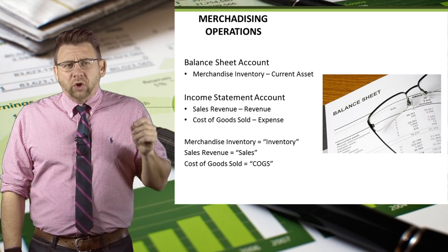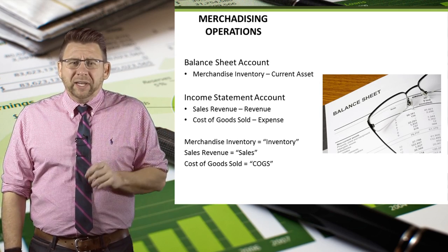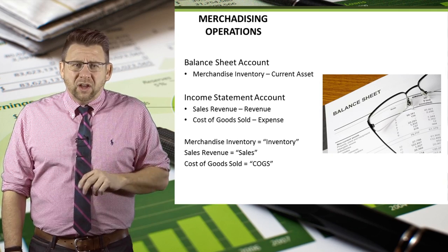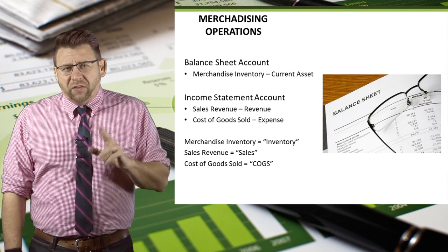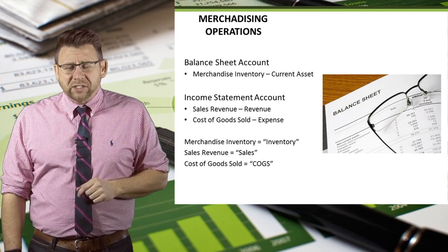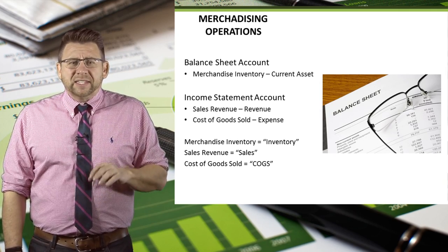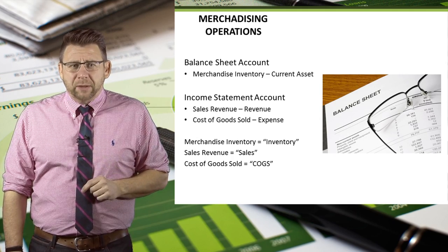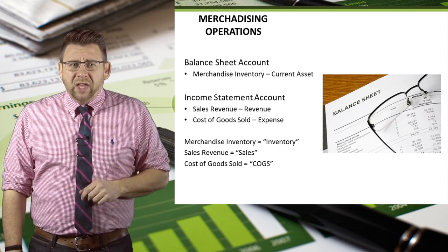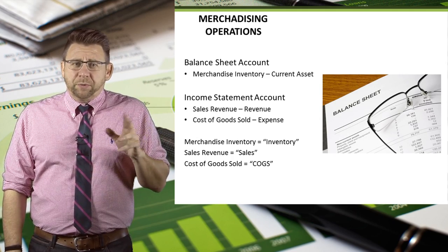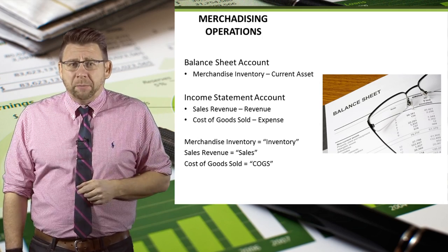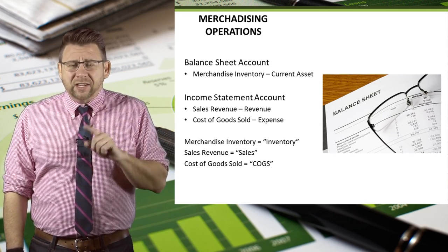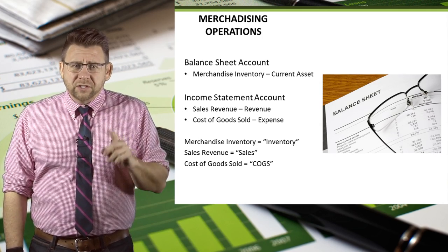Cost of goods sold, commonly abbreviated COGS and sometimes called cost of sales, is an expense account found on the income statement. The account's purpose is exactly what the name implies — it is the cost of the goods sold.